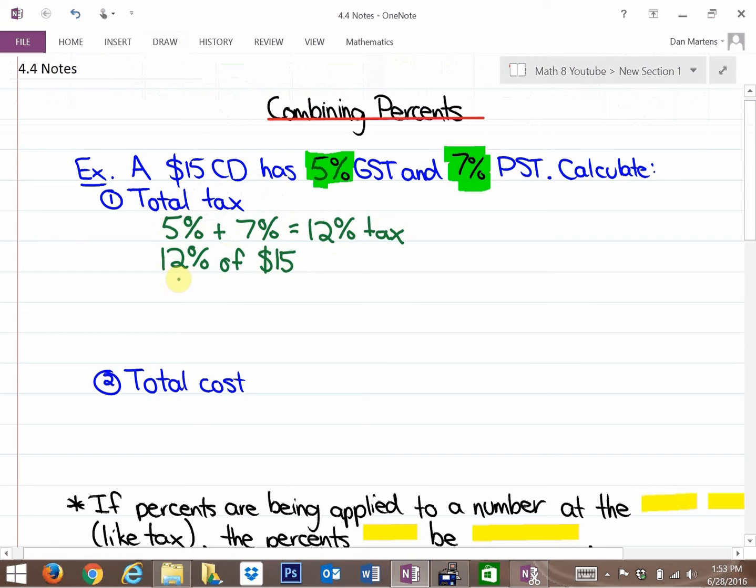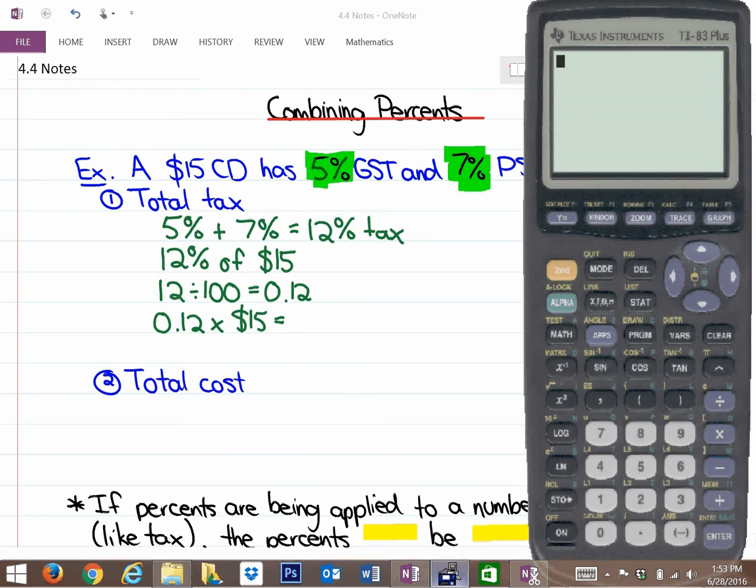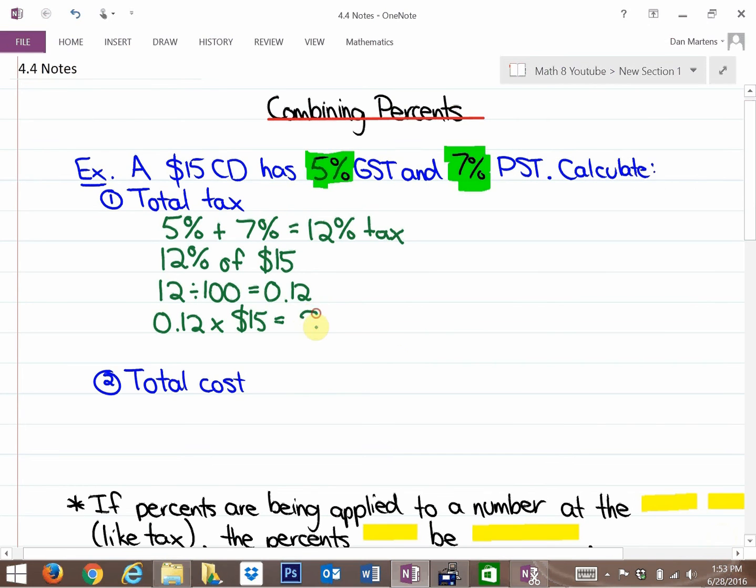Percent of a number, we learned how to do it on our calculator in two steps. First, convert the percent to a decimal. So 12% is 0.12 as a decimal. To figure out 12% of $15, we multiply 0.12 by $15, which tells us that the tax is $1.80.